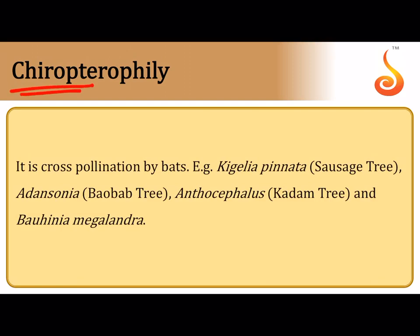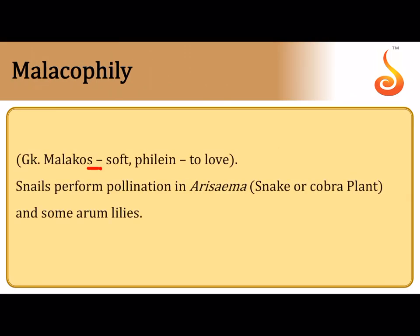Chiropterophily is pollination by bats (Chiroptera). Examples include Kigelia pinnata (sausage tree), Adansonia (baobab tree — a massive tree common in Africa), Anthocephalus kadamba (kadamba tree), and Bauhinia megalandra (camel's footprint tree). Malacophily is pollination by molluscs — snail pollination — as in Arisaema (the cobra plant) and some aroid lilies.